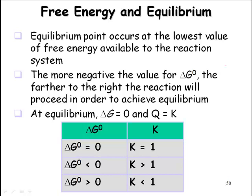Equilibrium point occurs at the lowest value of free energy available to the reaction system. The more negative the value of delta G, the further the reaction will proceed toward products to achieve equilibrium. In equilibrium, free energy equals zero and Q equals K.